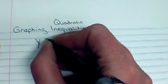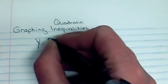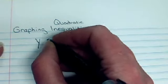But the difference is, instead of having an equal sign, now we have either a less than, greater than, less than or equal to, or greater than or equal to. For this example, I'm going to have a less than.